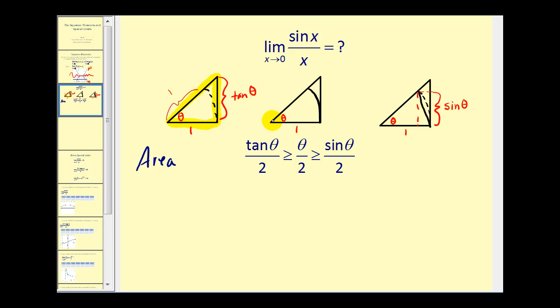Now let's figure out the area for this sector and then for this smaller triangle. The area of a sector is one-half r theta. Since r is one, we have one-half theta, or theta divided by two.